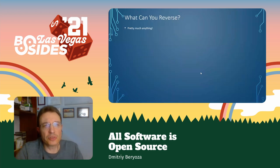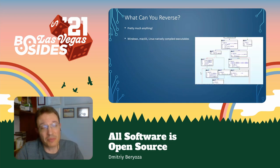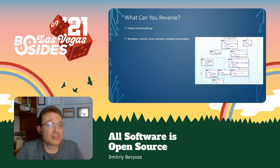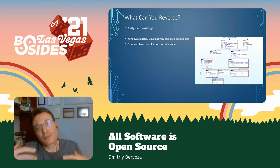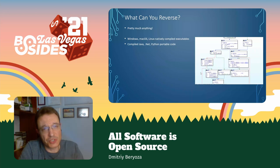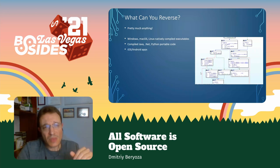So what can you reverse? Pretty much anything. All executables that you see on Windows, macOS, Linux that are compiled into native code. Also executables compiled into portable code, such as Java, .NET, Python, iOS, and Android apps.